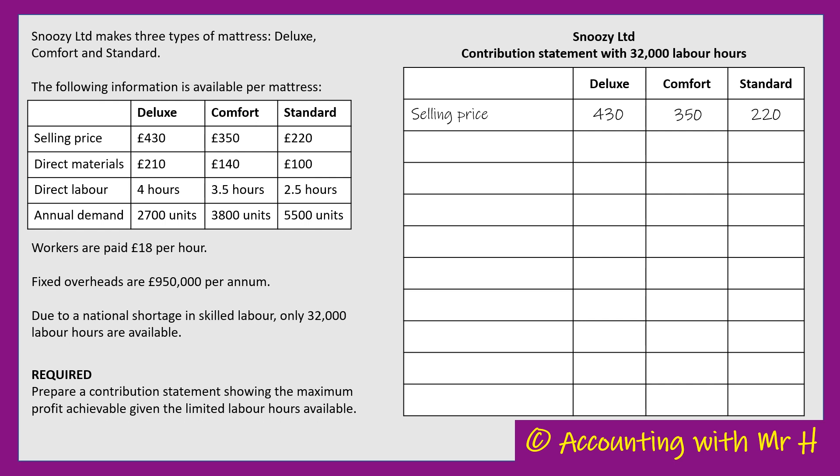I'm going to list any variable or direct costs - costs that change in proportion to the amount of units being produced, or costs directly associated with the actual manufacture. They've given me the direct materials - things like cotton, springs, and whatever else goes into a mattress. Direct materials for a Deluxe is £210 per mattress, Comfort £140, the Standard £100.